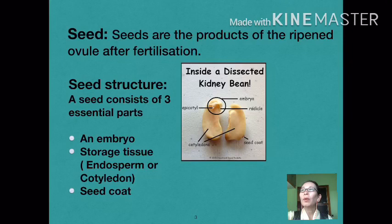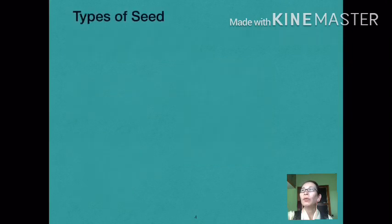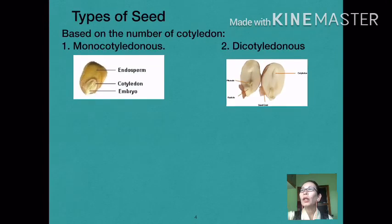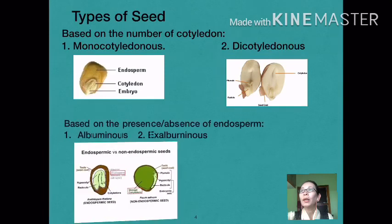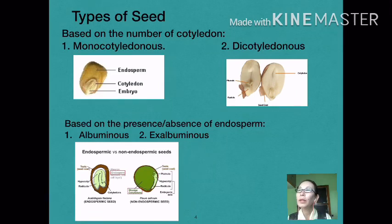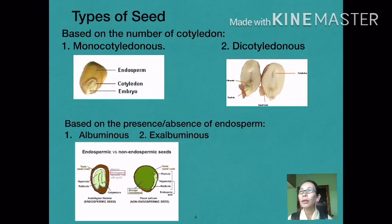Depending on the number of cotyledons, a seed can be classified into a monocotyledonous seed with only one cotyledon, as in maize, or dicotyledonous seeds with two cotyledons, as in groundnut. Similarly, based on the presence or absence of residual endosperm, seeds can be of two types: albuminous or endospermic seeds, and ex-albuminous or non-endospermic seeds. Castor, maize, rice, wheat, and cotton are examples of albuminous seeds, while pea, grams, and beans are examples of ex-albuminous seeds.